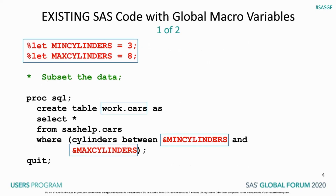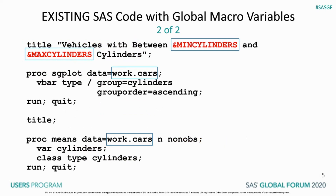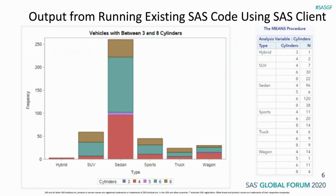We'll start with existing SAS code and then go through the steps needed to execute it from the web. The macro variables are defined and then used in the PROC SQL code to select specific records from the SAS help.cars data set. The subset of the data is stored in the work.cars data set. The macro variables are also used in the title that precedes the output. The SG plot and means procedures use the subset of data stored in work.cars. Here are the results of running the existing SAS code from a SAS client such as Enterprise Guide or the SAS Windowing System. Note that the PROC means output appears to the right of the chart in this slide for display purposes; it appears below the chart when you run the SAS code.